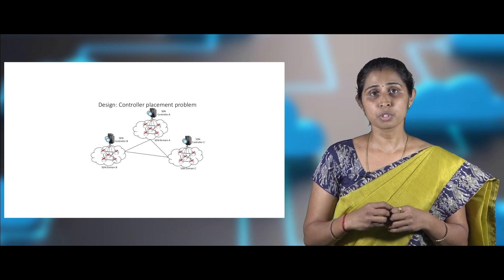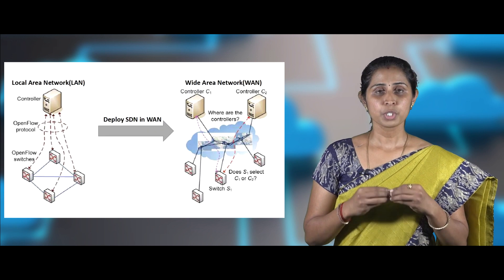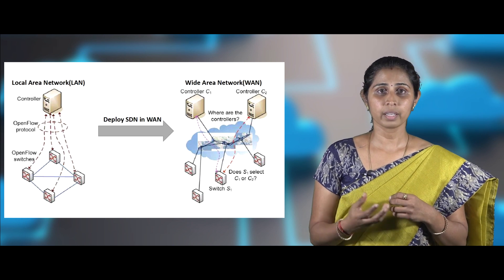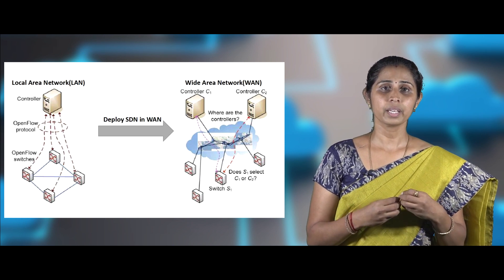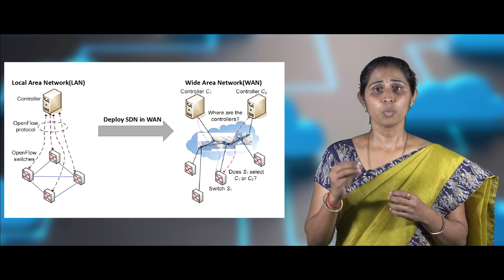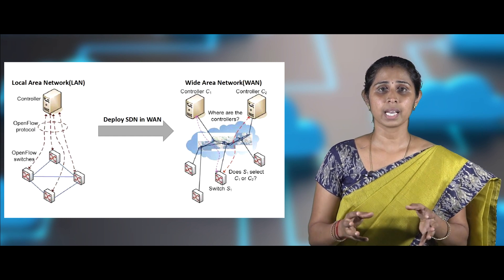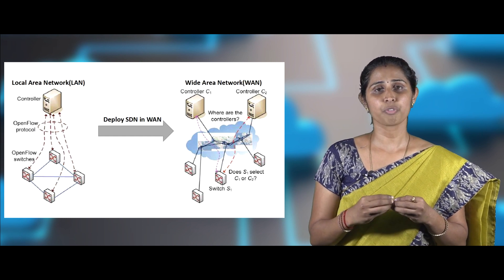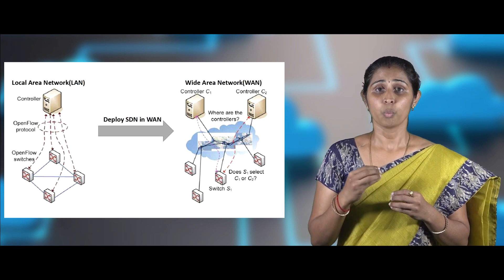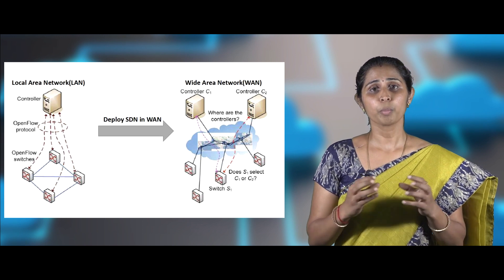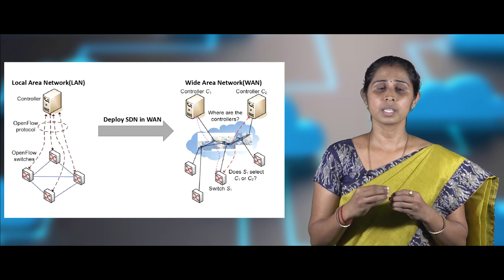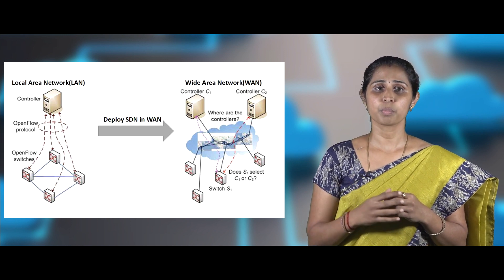Distributed SDN, along with its benefits, brings along the problem of the number of controllers required and their placement in the network. This is referred to as the controller placement problem. The placement of a controller depends on the type of network — either local area network or wide area network. For LAN, the controller placement problem is simple; generally only one controller is adequate because LAN is less affected by propagation delay compared to WAN. However, a WAN is normally characterized by long propagation delay and limited bandwidth, making controller placement one of the most urgent challenges in deploying SDN in WAN.